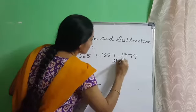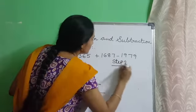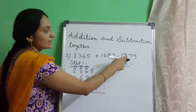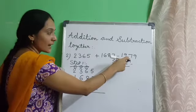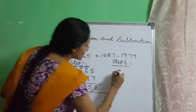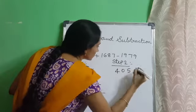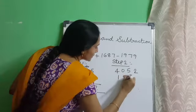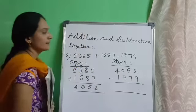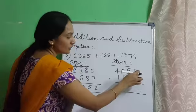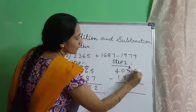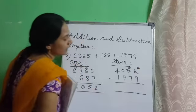Now step 2: subtract the third number 1979 from the sum of the first two numbers, 4052. 9 ones cannot be subtracted from 2 ones, so we borrow 1 from the tens place. 5 minus 1 is 4, and this 2 becomes 12. 12 minus 9 is 3.